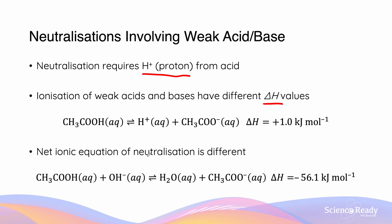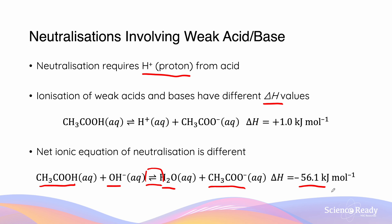The net ionic equation for neutralization is different when a weak acid is involved. For example, acetic acid reacting with OH⁻ forms water and the acetate ion. Because this is a weak acid reaction, it is reversible — we are in equilibrium. The ΔH here is −56.1 kJ/mol, which is less than the value we saw earlier for the strong acid and strong base reaction.